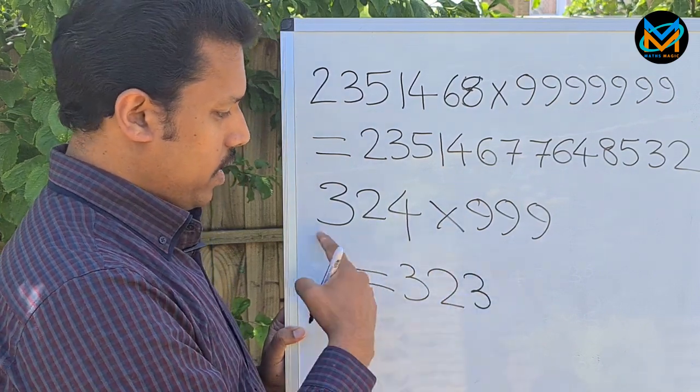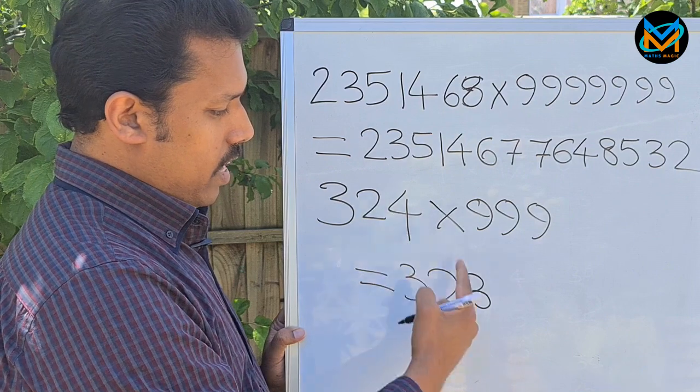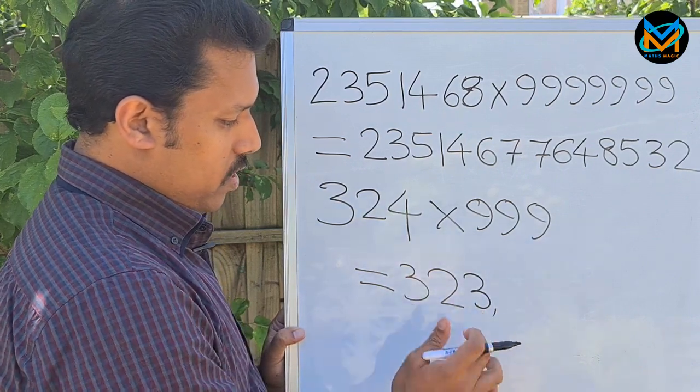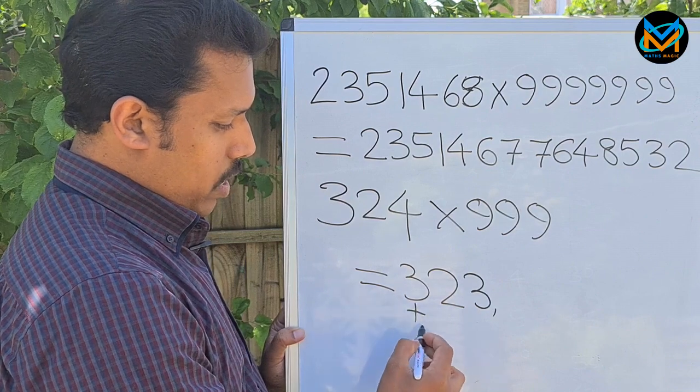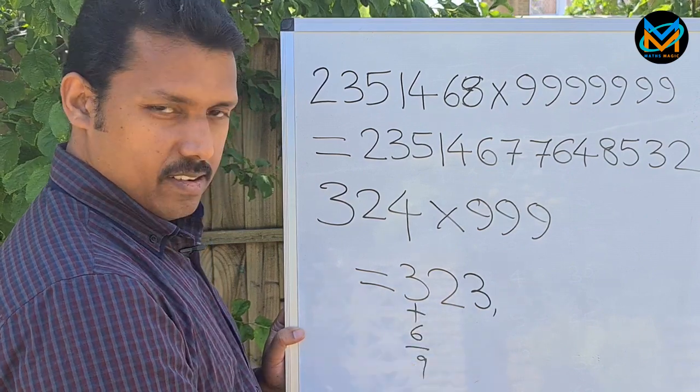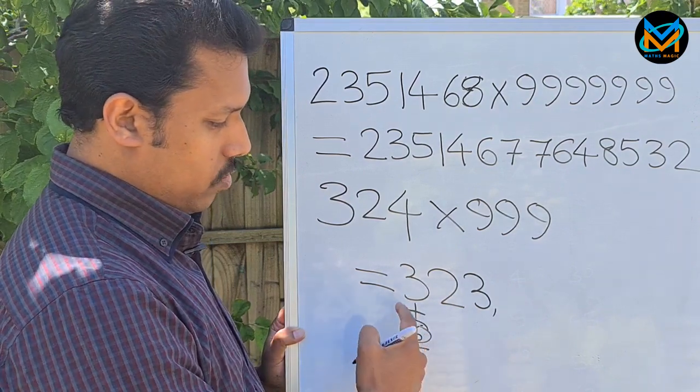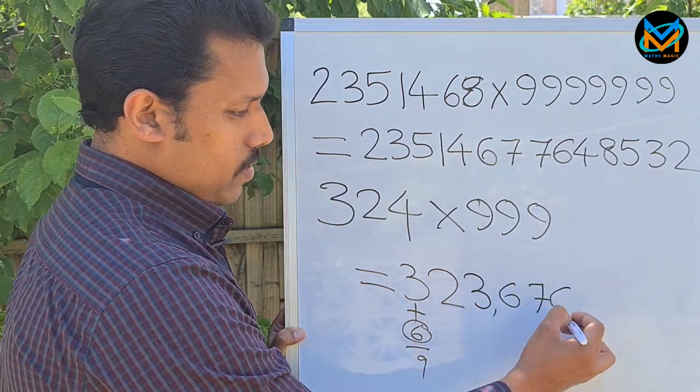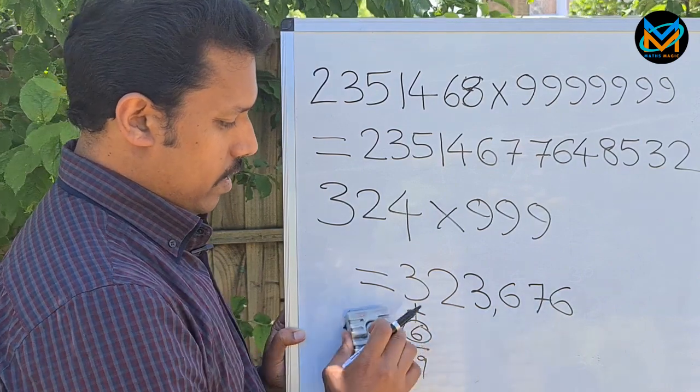That is the first trick - take away one from it. Then the rest of the digits, just put a mark here. We need to find these three. Find out what number you need to add to this to get nine. So you get six. Three plus six is nine, two plus seven is nine, three plus six is nine. That is your answer. Very simple.